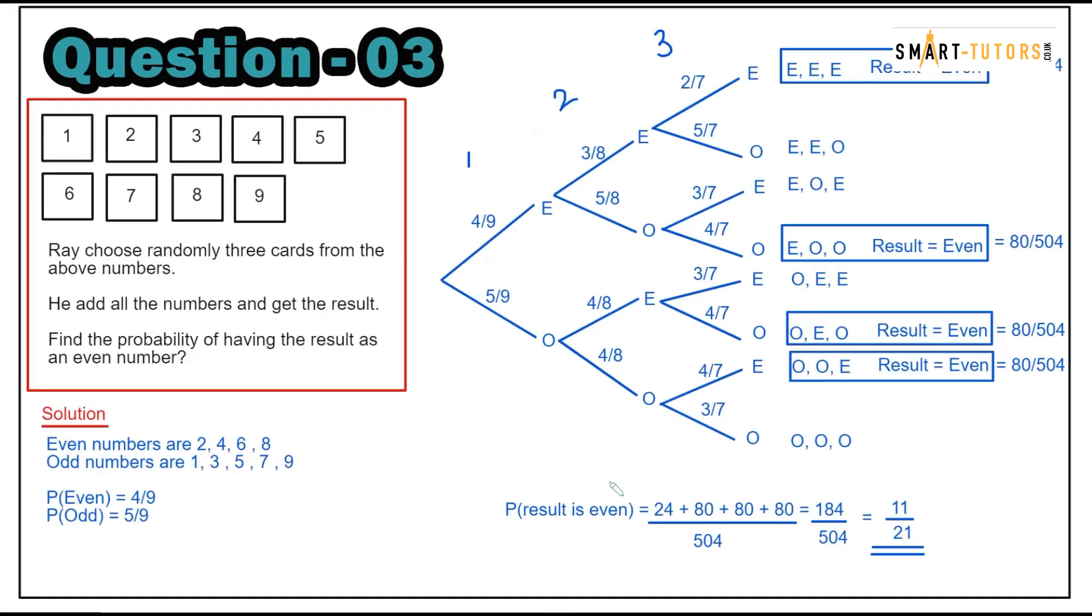Question number three: nine cards are given. Ray chooses randomly three cards from the above numbers, adds them all, and gets a result. Find the probability the result is an even number. Even numbers are 2, 4, 6, 8. Odd numbers are 1, 3, 5, 7, 9. Probability of even is 4 over 9, probability of odd is 5 over 9.